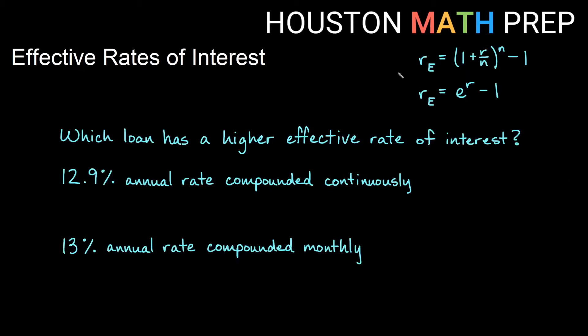Let's look at some examples. I've got my formulas here. We want to know which loan has a higher effective rate of interest. So I have a loan that has 12.9% interest and I have a loan that has 13% interest. So these are close, but they also are compounded differently. So the effective rates are not going to be exactly what's stated here. They'll be a little bit higher than what we're actually seeing.